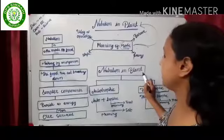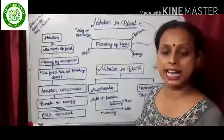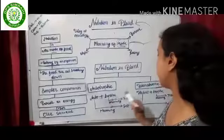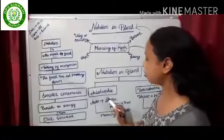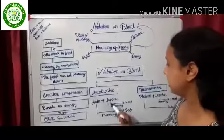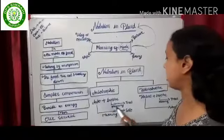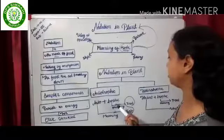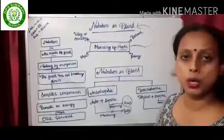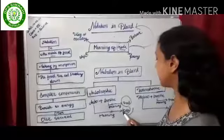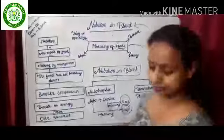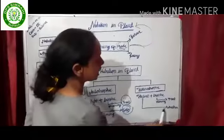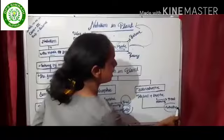Nutrition in plants, we can categorize broadly into two parts. First is autotrophic and second is heterotrophic. Auto means self and tropic means to eat — so autotrophic means self-eating, with no dependency on others. Heterotrophic means depending on others.